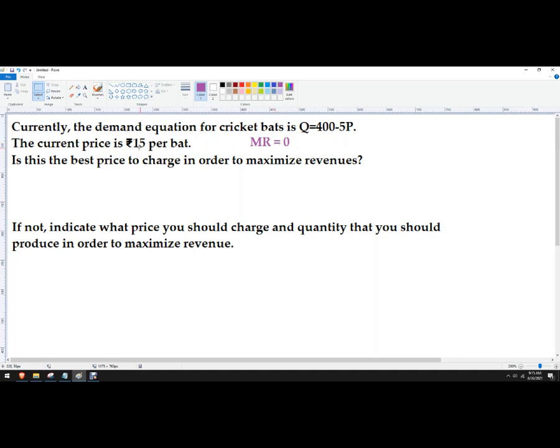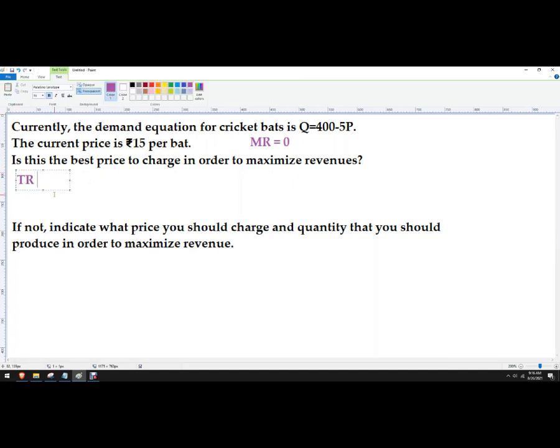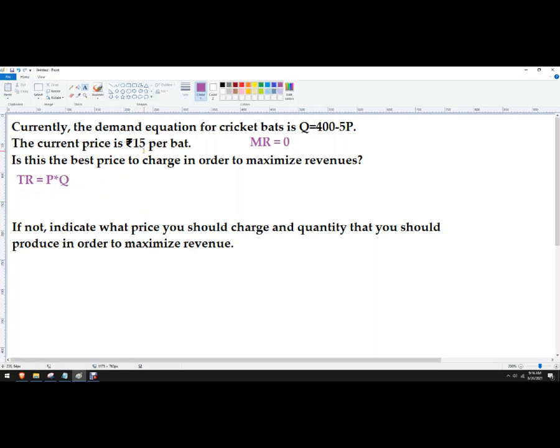So currently we've got this problem for cricket bats. It's 15 rupees per bat. And the question is, is this the best price to charge to maximize revenue? So let's figure out what our total revenue actually is. So total revenue equals price times quantity.